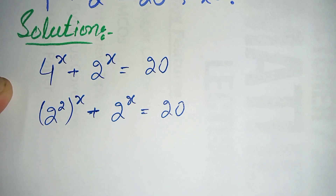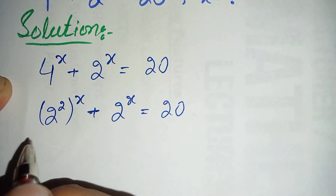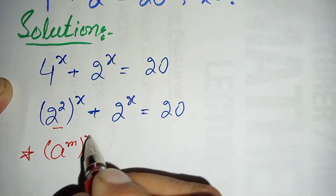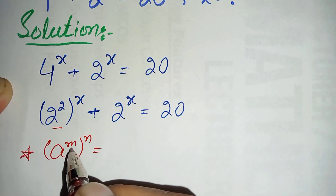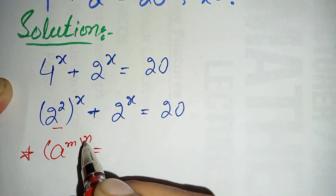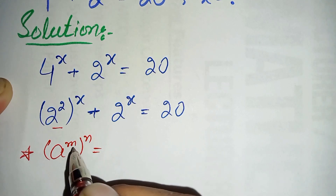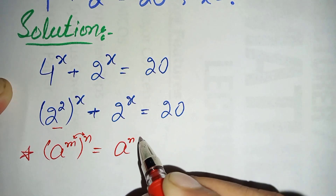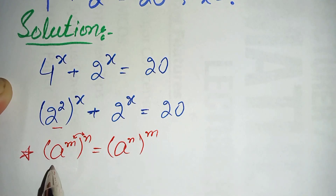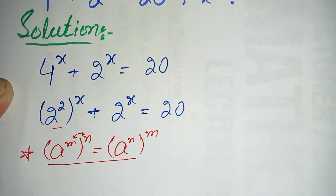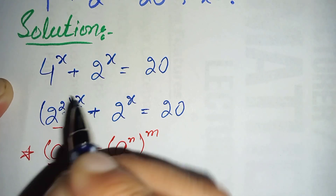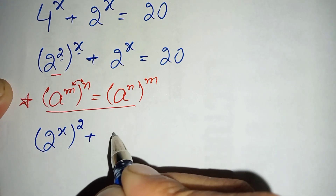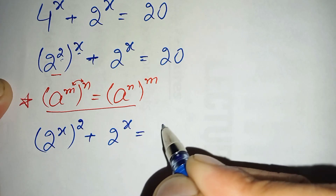Next, in this step we will use an exponential math property to interchange the position of these two powers. The property is: a raised to power m, whole raised to power n, can also be written as a raised to power m times n, which can also be written as a raised to power n times m. So using this exponential property, we interchange the two powers, and this becomes 2 raised to power x, whole squared, plus 2 raised to power x, is equal to 20.